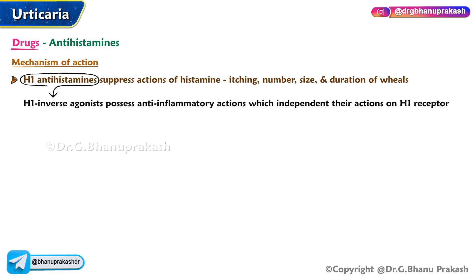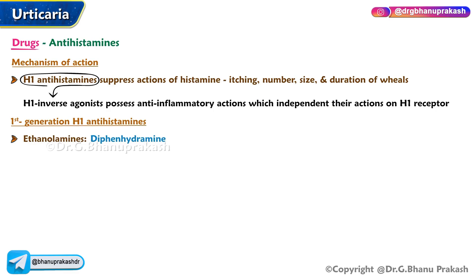H1 antihistamines are inverse agonists that possess anti-inflammatory actions which are independent of their actions on the H1 receptor. First-generation H1 antihistamines include ethanolamines such as diphenhydramine, phenothiazines such as promethazine, and alkylamines such as chlorpheniramine.